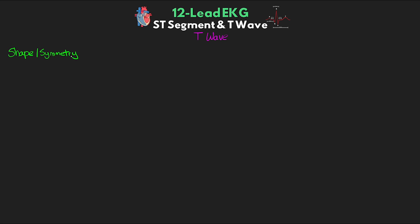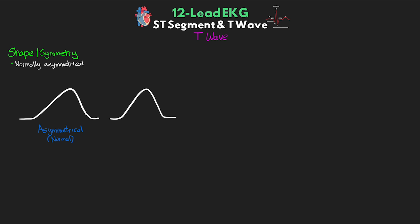When talking about the shape of the T wave, first we want to evaluate the symmetry. Normally the T wave is asymmetrical, meaning if we divide the T wave at the peak, the two sides are not going to be equal. Here are two examples — the first is a normal asymmetrical shape where the first part is much larger than the second. The second example is a symmetrical T wave where both halves are basically the same size. Symmetrical T waves are pathological; we often see them with ischemia, electrolyte abnormalities, and some CNS problems. Early identification of MI can also occur with the presence of symmetrical T waves. That said, some people do have normal symmetrical T waves, so we need to rule out pathology before considering it normal.